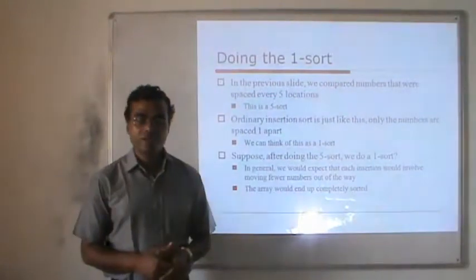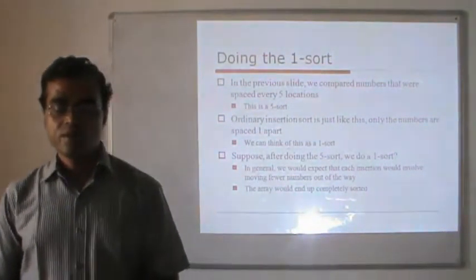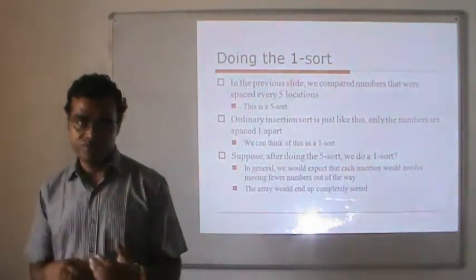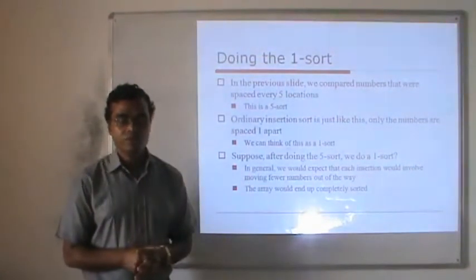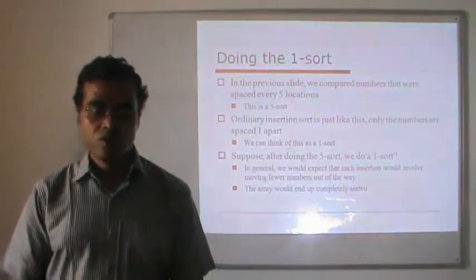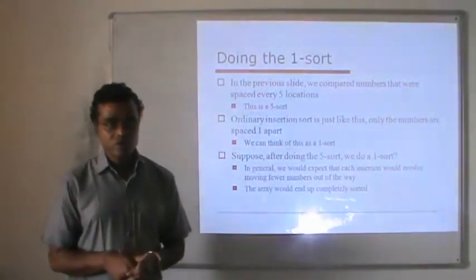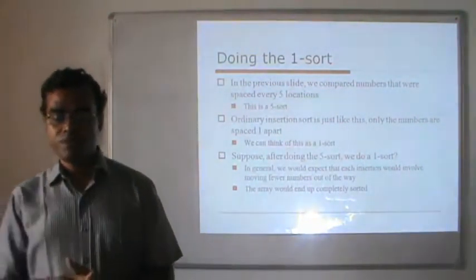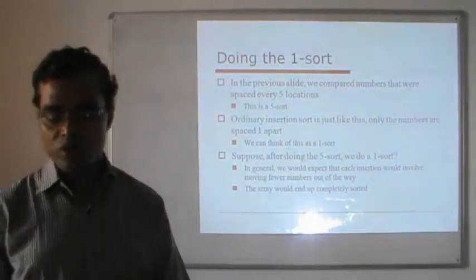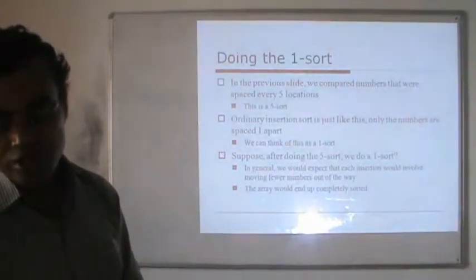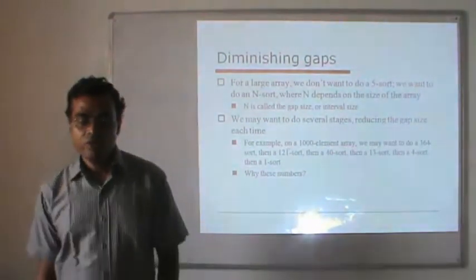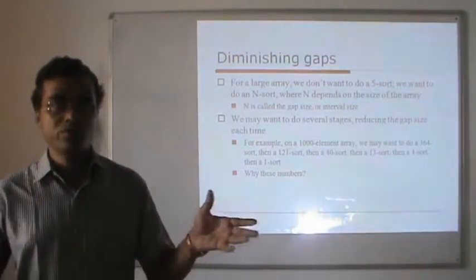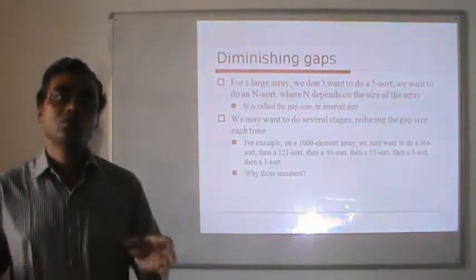In the previous slide, we compared numbers spread over 5 positions — this is called a 5-sort. In ordinary insertion sort, numbers are spread at 1 space — that is called a 1-sort. So after doing the 5-sort, we do the 1-sort. Because of the 5-sort, we will have nearly sorted data, so each insertion in the 1-sort will involve moving fewer numbers, and the array gets completely sorted. For larger arrays, we don't want only a 5-sort — we want an n-sort where n depends on the size of the array. If we have more elements, a 5-sort would create too many segments.